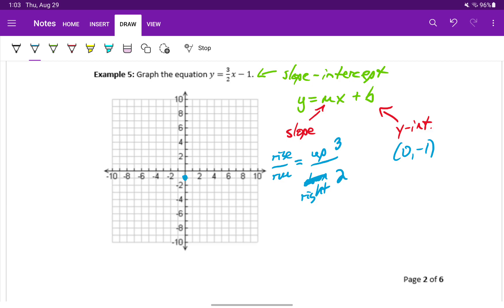Starting at our y-intercept then, we'll move up 1, 2, 3 units, and to the right 1, 2 units. Now we have 2 points plotted, and we can construct that straight line.